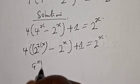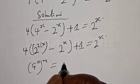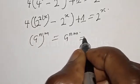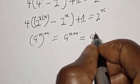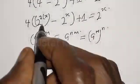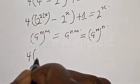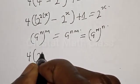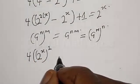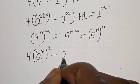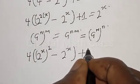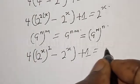Remember: a raised to power n, raised to power m, is the same as a raised to power n·m, which also equals a raised to power m raised to power n. Therefore our equation becomes 4 times [2 raised to power s, times 2 raised to power x squared, minus 2 raised to power x] plus 1 equal to 2 raised to power x.